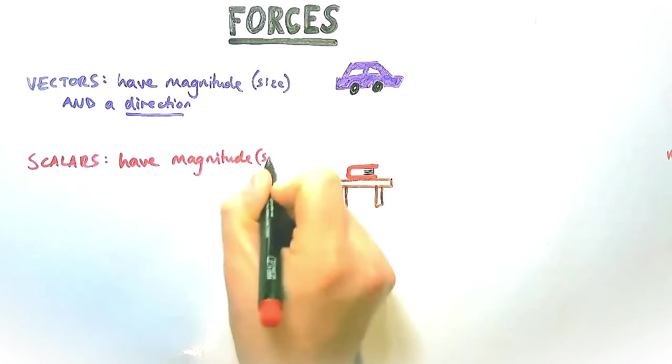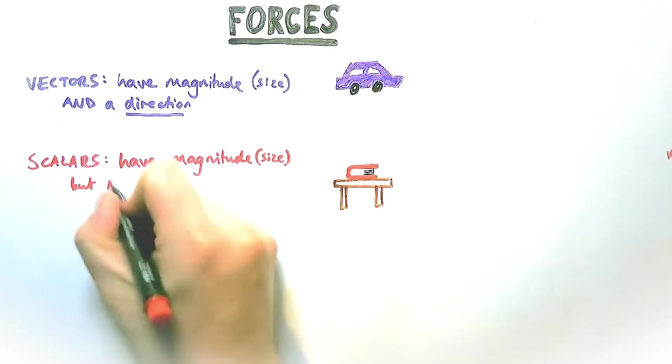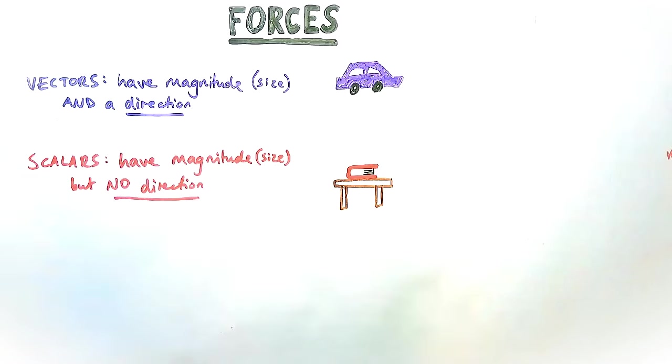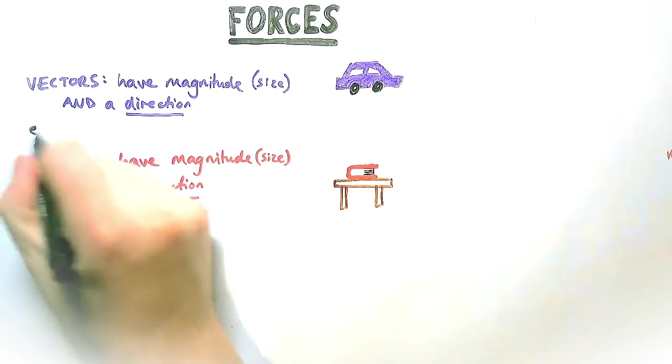Scalar quantities in physics have a magnitude or size but no direction at all. So direction doesn't matter to them. Let's look at a couple of examples.